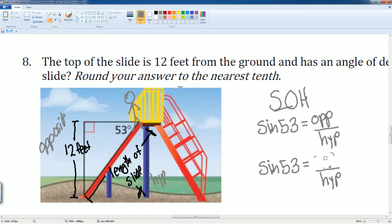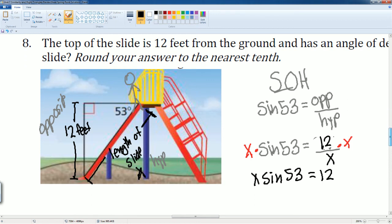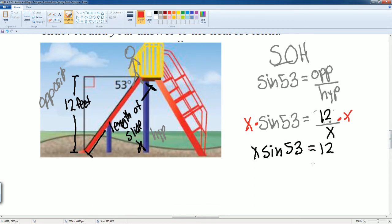...my 12 feet, and my hypotenuse is X. Now solving for that, I'm going to multiply X to both sides to get X alone. I get X sine 53 equals 12. Now I have to divide by sine 53...